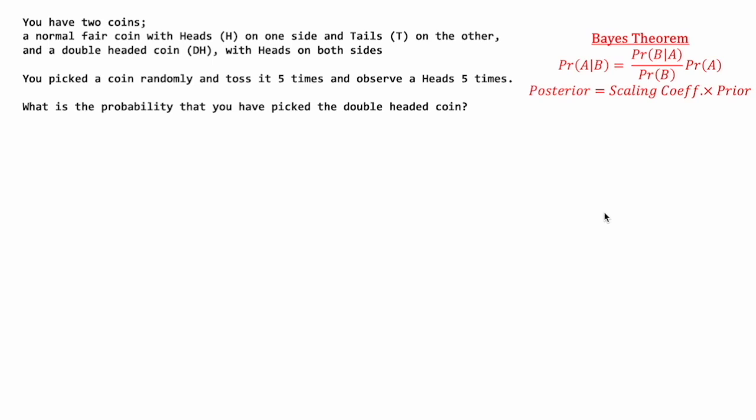Here, we are modifying our prior estimate of some outcome — in this case getting a double-headed coin — with some scaling coefficient to obtain a posterior estimate of the probability of this outcome. This posterior estimate reflects the effect of the new information, and that is what the scaling coefficient is for: to incorporate this new information into our prior estimate to obtain a posterior estimate. Using Bayes' theorem, the solution to the problem is the following equation.